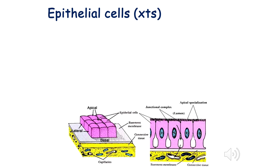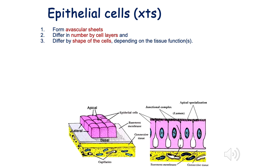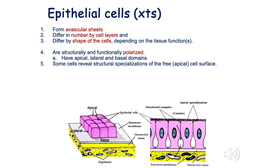Epithelial cells have several characteristics. One is the fact that they sit on a flat surface known as a basement membrane. Another is that they can be either one cell layer or several cell layers. They are also avascular, meaning they do not have their own blood supply — so consider how they survive without it; there must be something else providing nutrients. Depending on the number of cell layers, you can describe or characterize an epithelia, and also by the shape of the cells. They are also polarized.